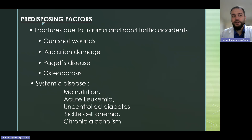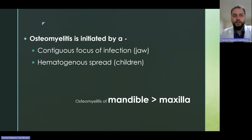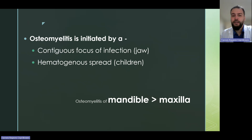Predisposing factors include fracture due to trauma, road traffic accidents, gunshot wounds, radiation damage, Paget's disease, osteoporosis, or systemic disease such as malnutrition, acute leukemia, uncontrolled diabetes, sickle cell anemia, and chronic alcoholism. Osteomyelitis is initiated by a contiguous focus of infection of the jaw, arthritis, or hematogenous spread, mostly in children. Clinical cases of osteomyelitis of the mandible occur much more often than osteomyelitis of the maxilla.